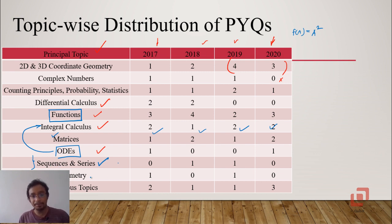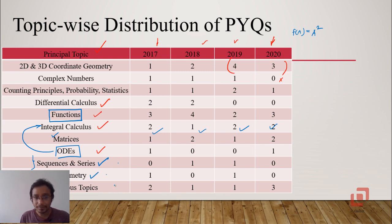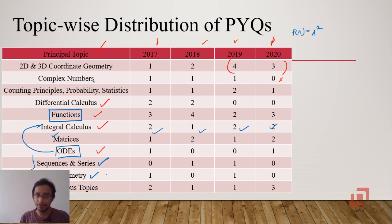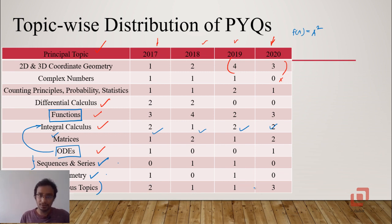Trigonometry, although not as difficult as integral calculus or other topics, is required. You can expect one question or possibly none, but you will use trigonometry to solve other problems — for instance, in complex numbers we have e^(iθ) = cos θ + i sin θ, so unless you know properties of trigonometric functions, you will not be able to solve that. As for miscellaneous topics, there were two questions in 2017, one in 2018, one in 2019, and three in 2020.